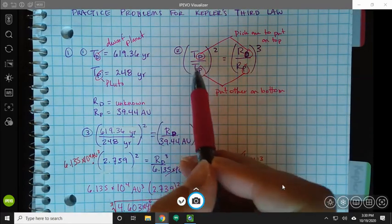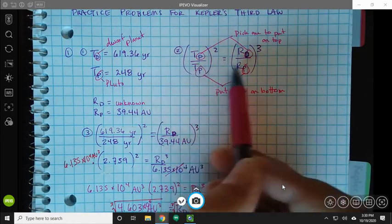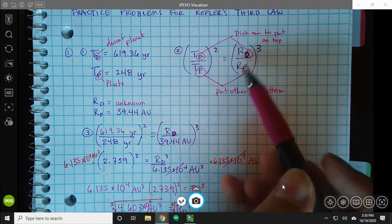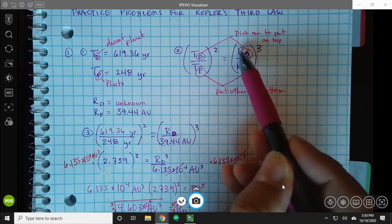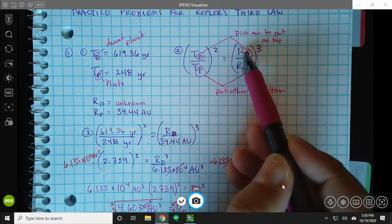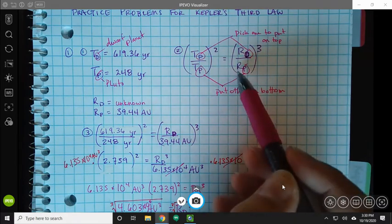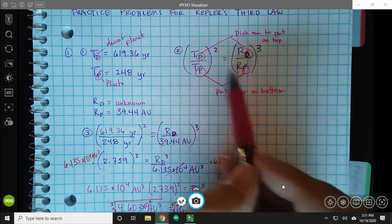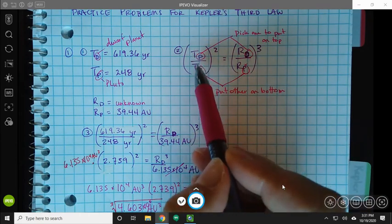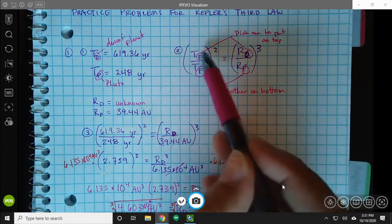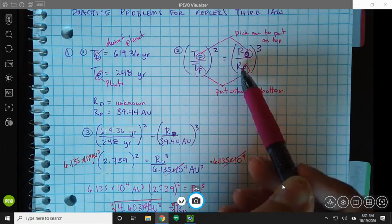So again, I'm going to set up my equation. I'm going to choose what to put on top and what to put on the bottom. I'm going to choose carefully here because RD is my unknown. So I'm going to put that on the top and then arrange around that. So RD over RP and all of that cubed, TD over TP and all of that squared. So this is the equation that I'm going to use.